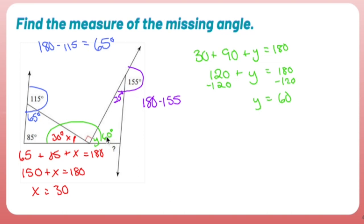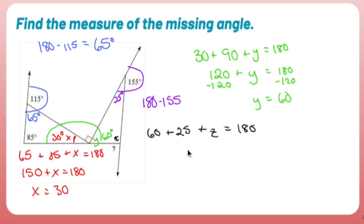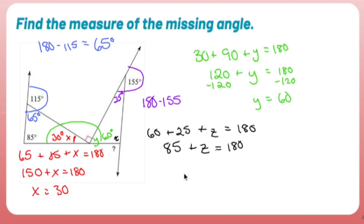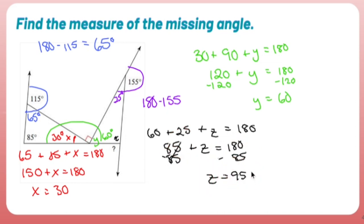I have 60 here and 25 here — another inside of a triangle I can find. Calling it Z: 60 plus 25 plus Z equals 180 (interior angle sum again). 60 and 25 is 85, so 85 plus Z equals 180. Subtract 85 from both sides and that missing angle is 95 degrees.